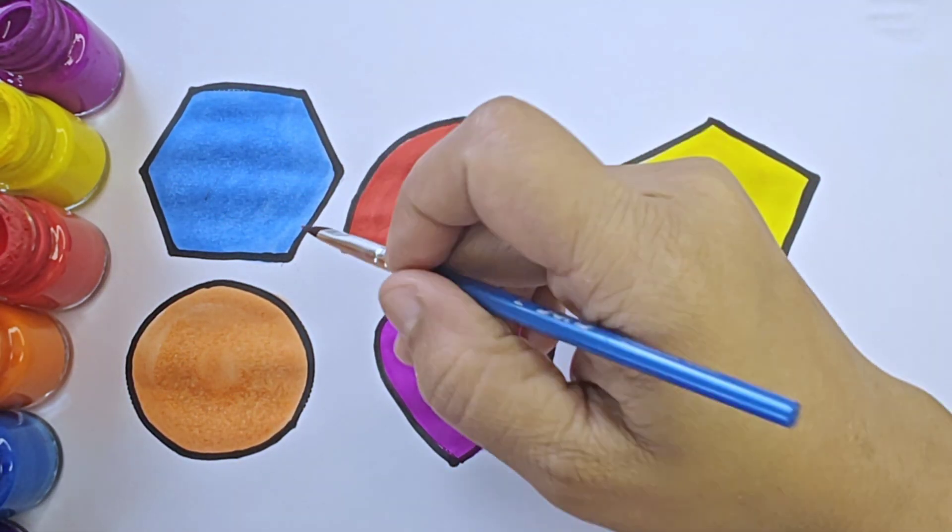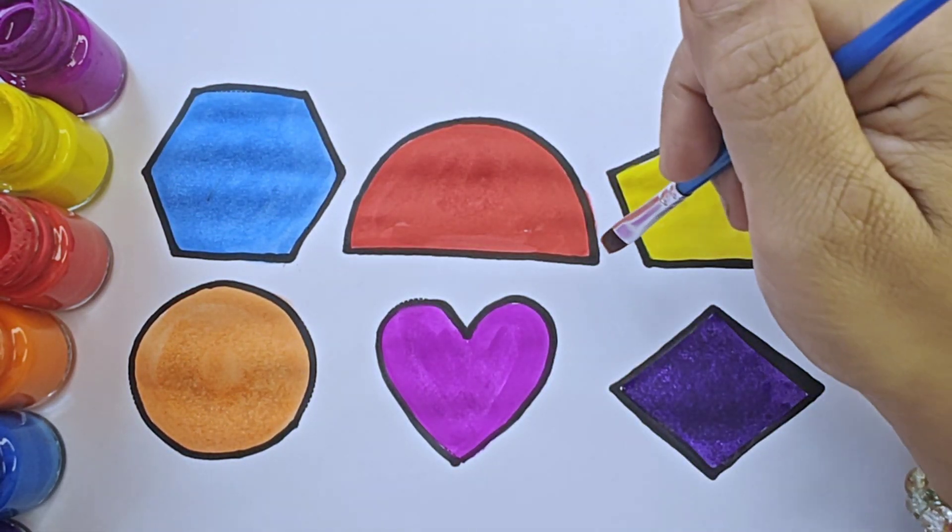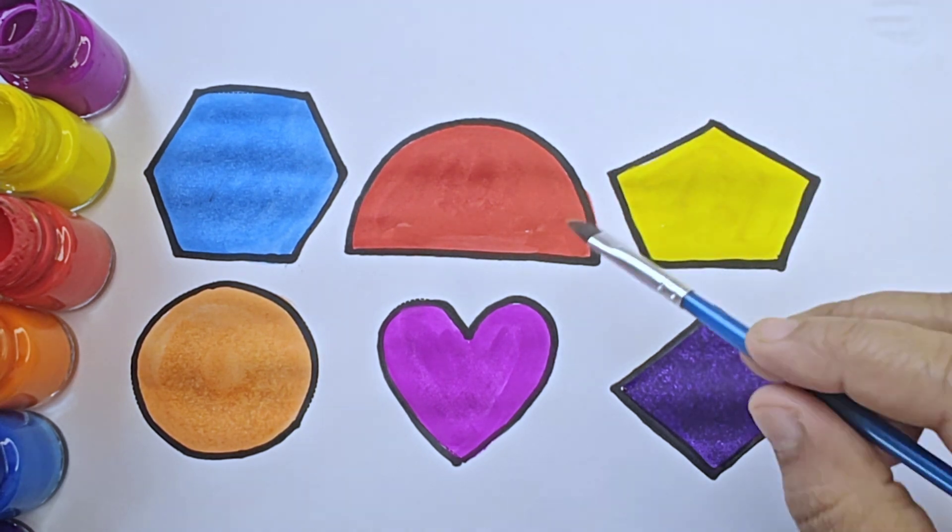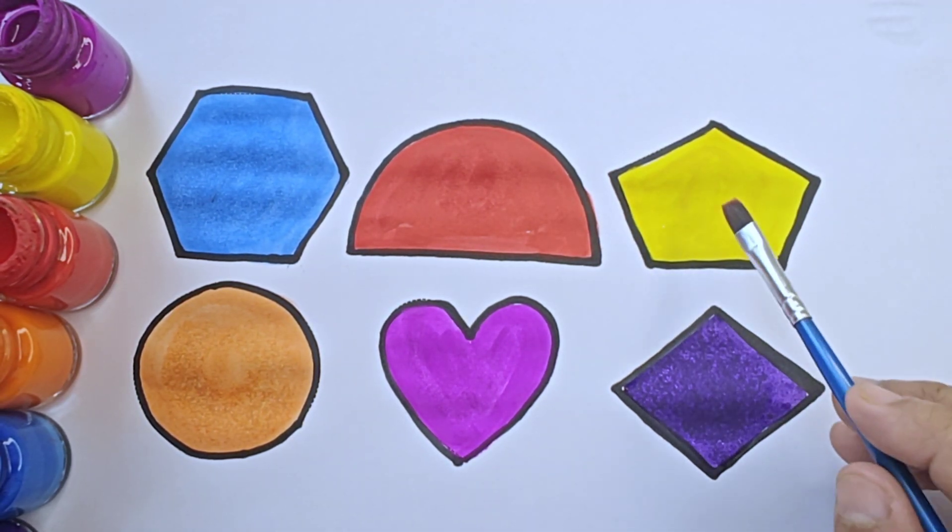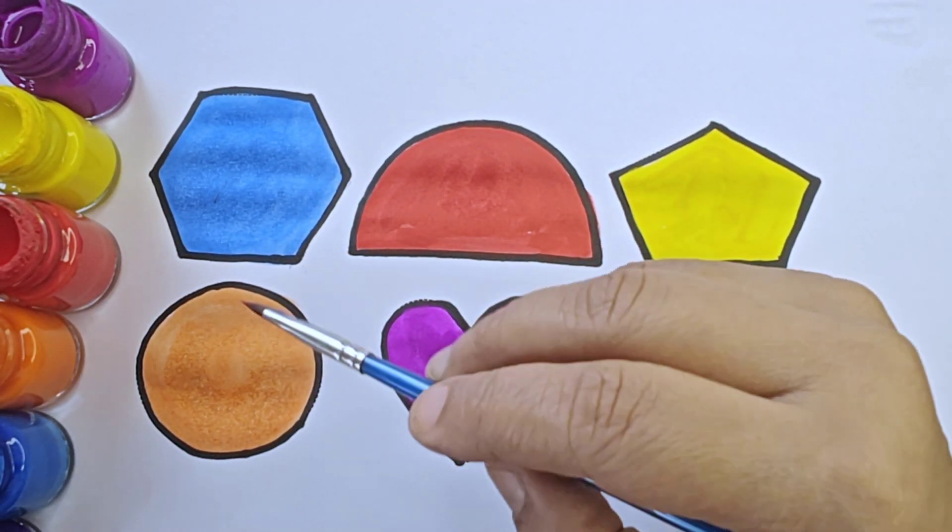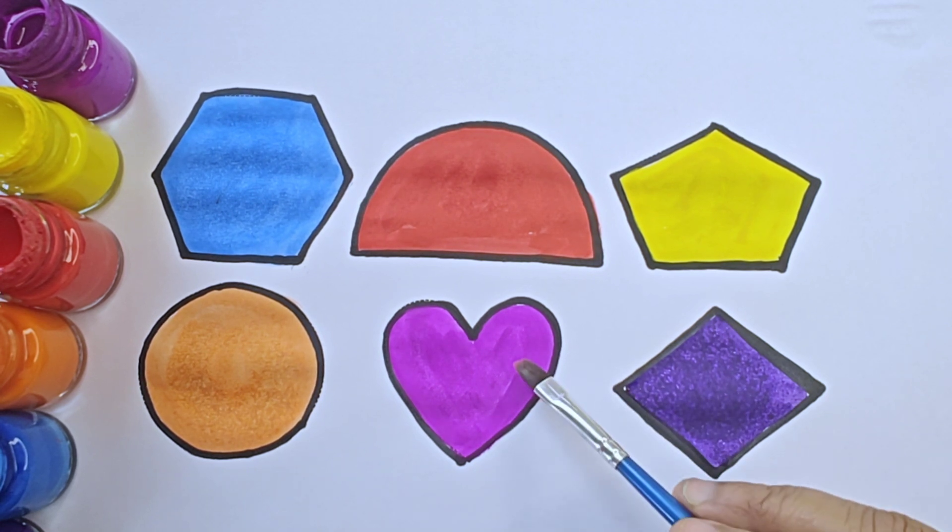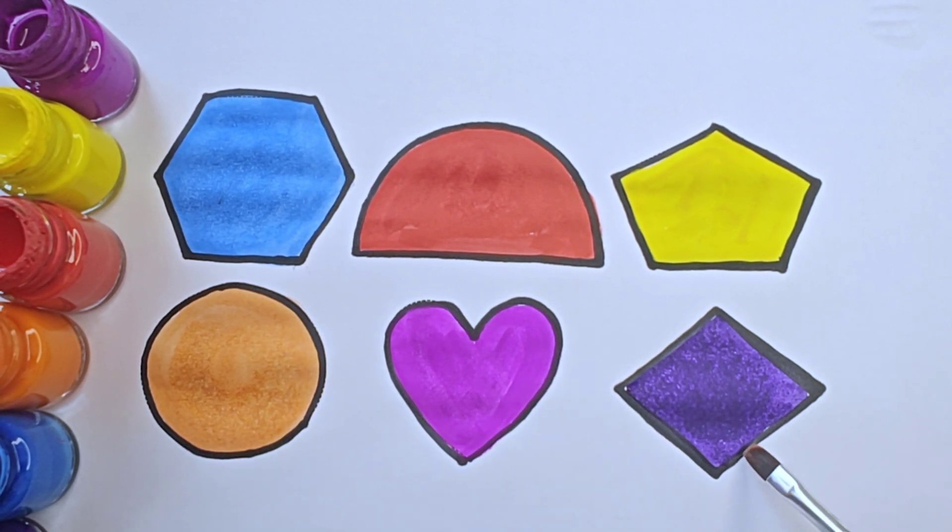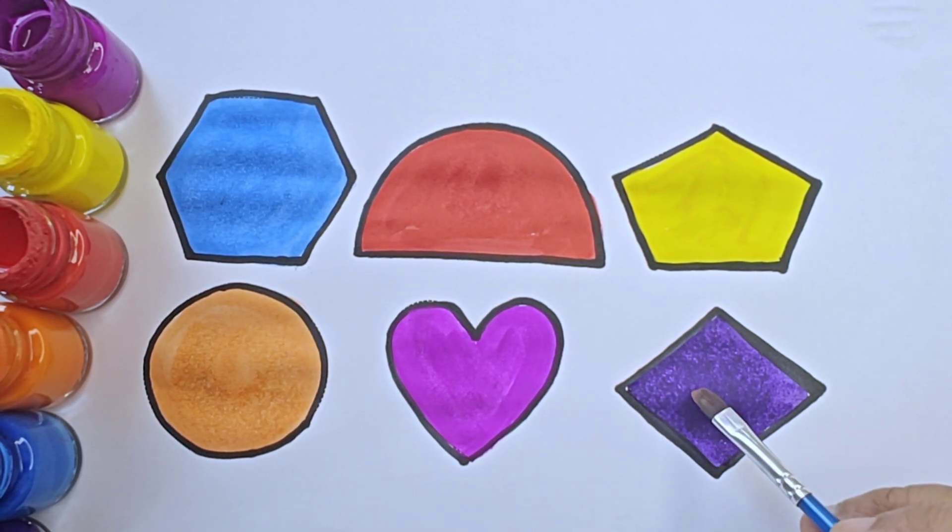Let us recall shapes and colors once again. It is hexagon, blue color. Half circle or semicircle, red color. Pentagon, yellow color. Circle, orange color. Heart, purple color. Rhombus or diamond, violet color.